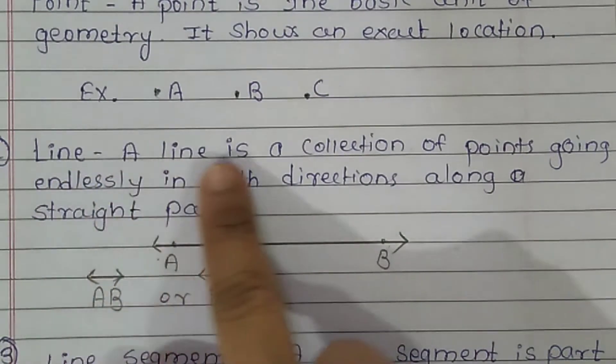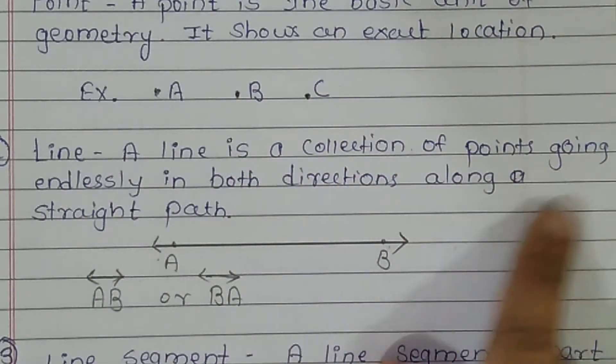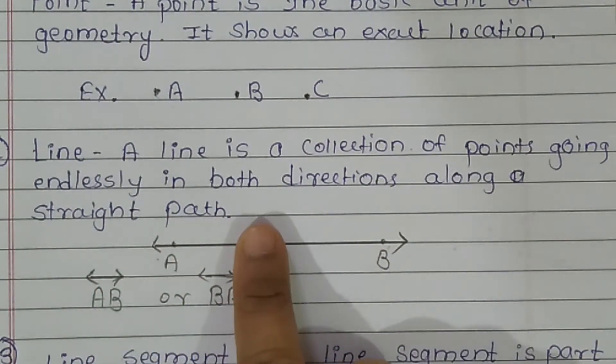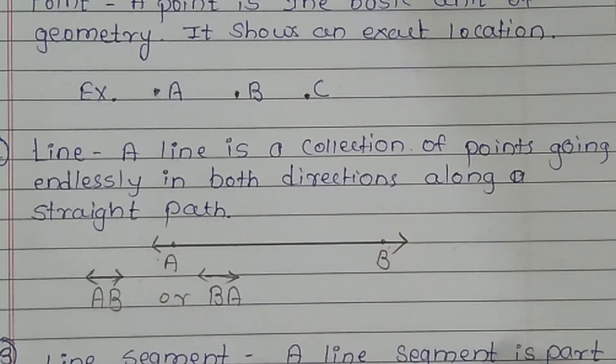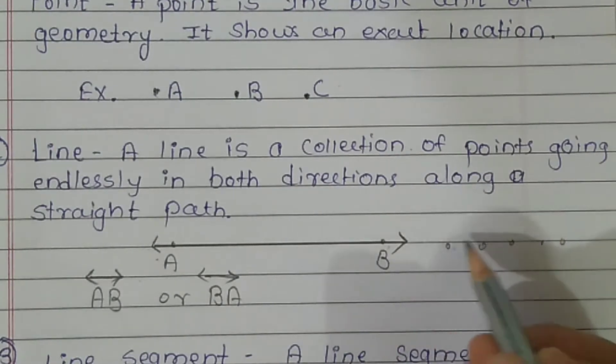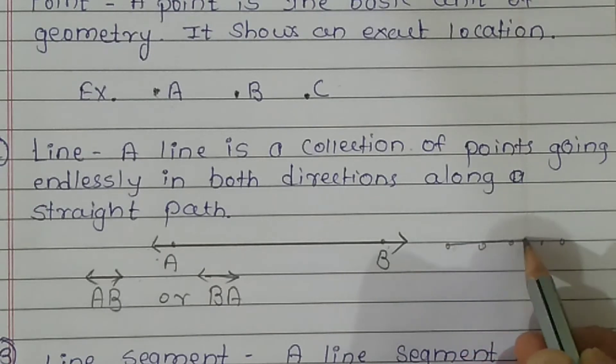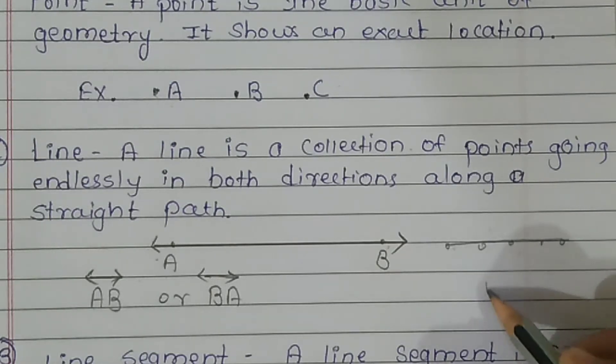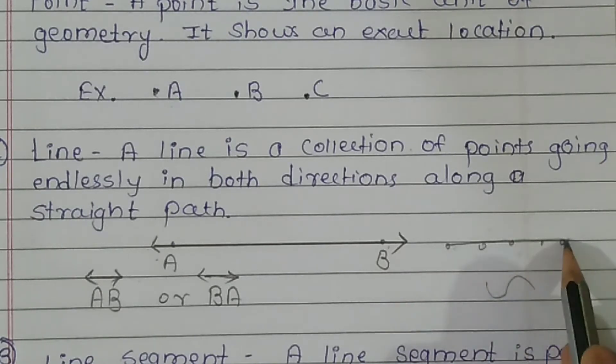Next, line. A line is a collection of points going endlessly in both directions along a straight path. This is a straight path. And the line is a collection of points. Like I have drawn some points and I have joined these points. So what is the line? How is the straight path? This is a curve line.